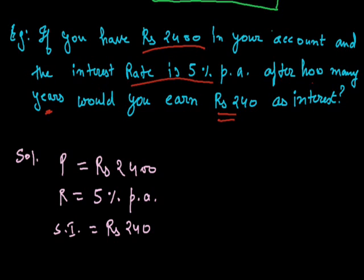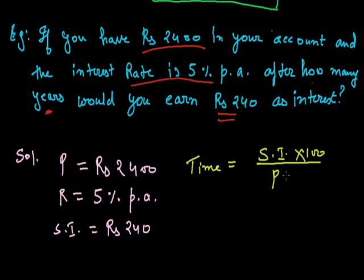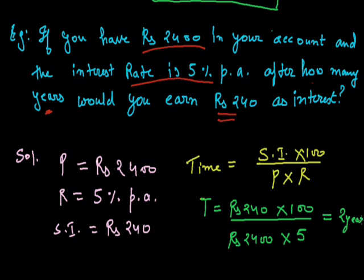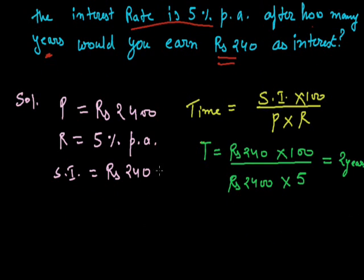We know the formula to calculate time: T is equal to simple interest into 100 whole upon P into R. Substituting the values: SI is Rs. 240 into 100, whole upon principal Rs. 2400 into rate 5%. If we calculate it, it comes out to be 2 years. Hence, the time period after which you will earn an interest of Rs. 240 on Rs. 2400 is 2 years.